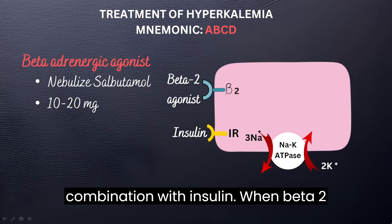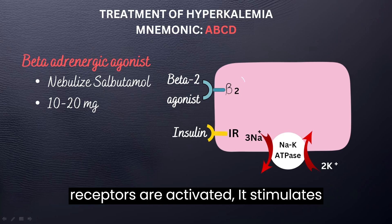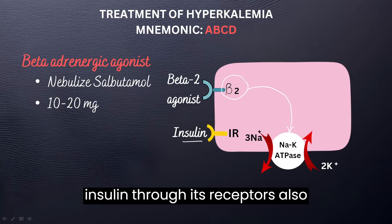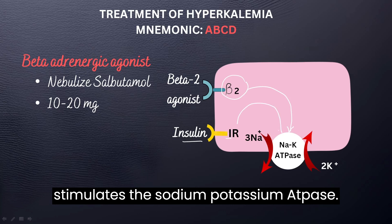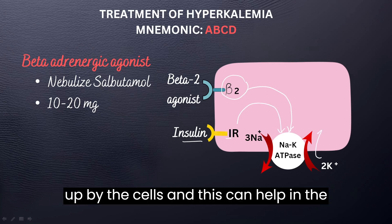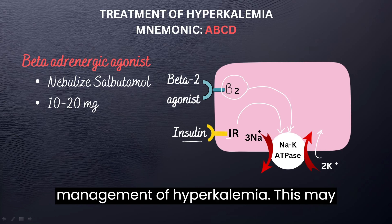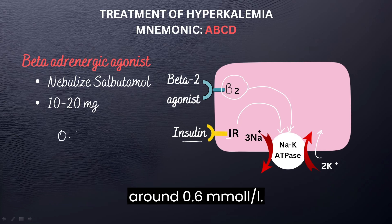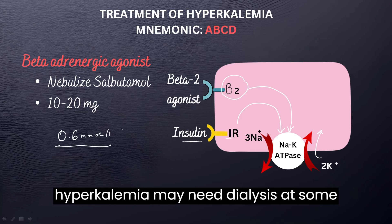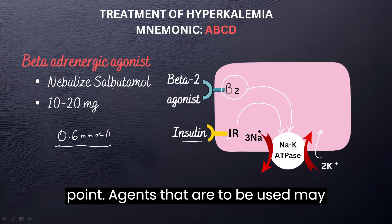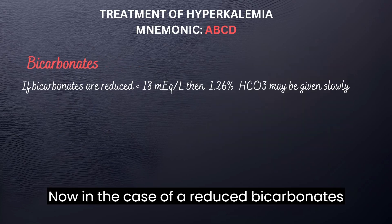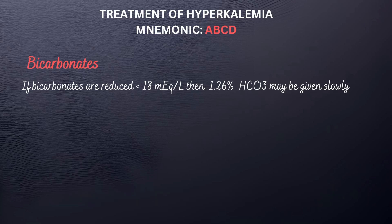Beta-adrenergic agonists may be used in combination with insulin. When beta-2 receptors are activated, it stimulates the sodium-potassium ATPase. Similarly, insulin through its receptors also stimulates the sodium-potassium ATPase. This leads to more potassium being picked up by the cells and can help in the management of hyperkalemia. This may reduce potassium by an average of around 0.6 mmol, which is also not very substantial. Hence, a patient with severe hyperkalemia may need dialysis at some point. Agents that may be used include salbutamol or albuterol. In the case of a reduced bicarbonate below 18, this may be replaced very slowly.